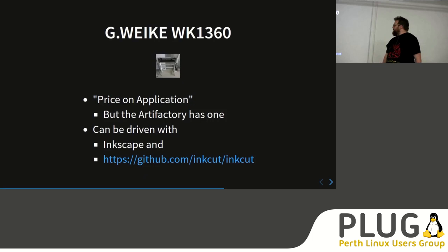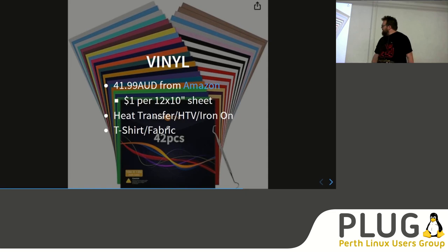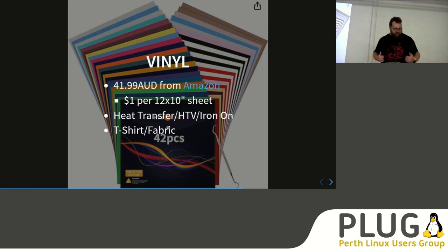That machine can be driven completely with open source software like Inkscape and InkCut — I imagine InkCut is like a driver that Inkscape uses. The vinyl we were using is bought in a bulk lot for $42, working out to about a dollar per sheet. A 12-by-10 inch size is fairly good for printing onto a t-shirt, so if you want a full-size print, this is something you might want.